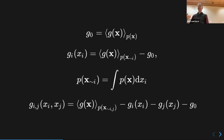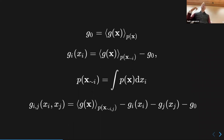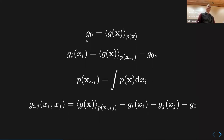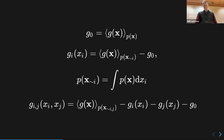With a bit of math — there's more detail in the notes or references — you can work out what these terms are using the following expectations. The first term is like a mean: it arises from just averaging over p(x) of your simulation g(x).